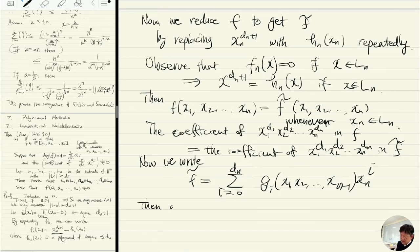Then the degree of gi—let's look at the degree of gdn. It is exactly d1 + d2 + ... + dn-1.